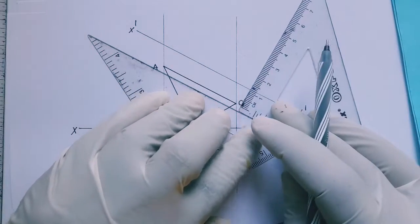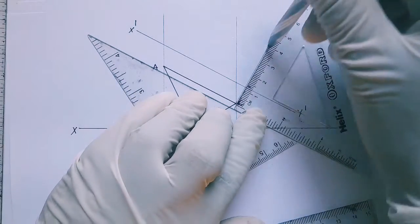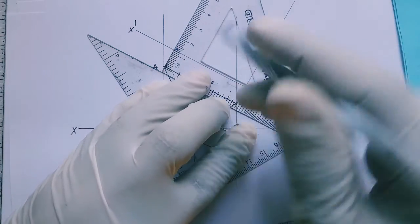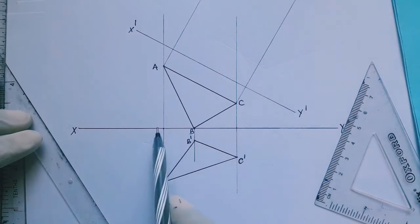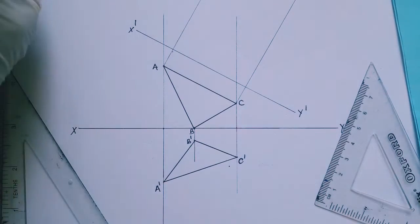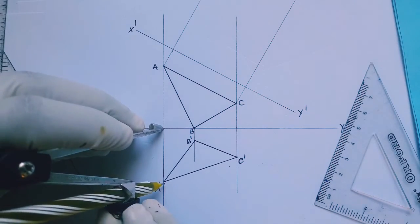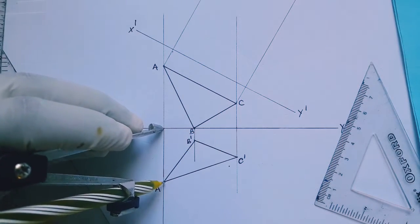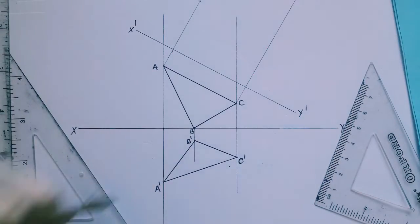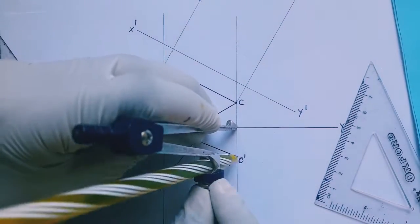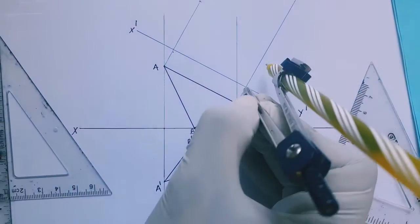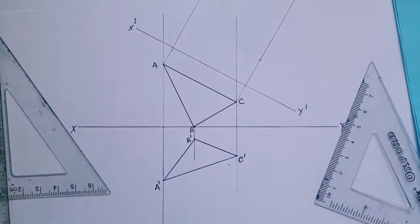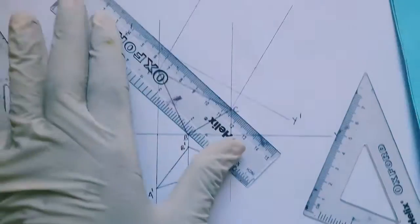Then we shall transfer point AC, A prime C prime, using our XY as a reference. We carry A prime and locate it on this plane. Then we transfer C prime again using XY as the reference. Our new reference is X prime Y prime. Come and locate it, then draw a straight line joining those two points.